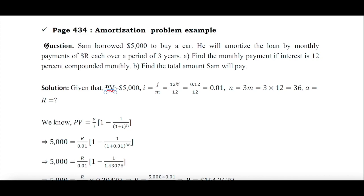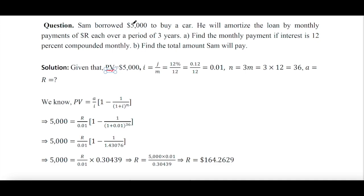Let me read this problem first. Sam borrowed $5,000 to buy a car. Since the problem is related to borrowing, this amount is the present value, because present value is the amount of any kind of loan. He will amortize the loan by monthly payments. Therefore M will be 12. The payment of each installment in our formula we denote by small a,